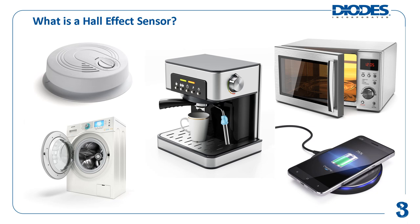Coffee and espresso machines can use Hall Effect Sensors as part of a flow meter to detect the amount of beverage dispensed. Microwave ovens can use Hall Effect Sensors to detect if its door is opened or closed, and Hall Effect Sensors can also be used in the microwave's control knob and buttons. Phone docking stations can use Hall Effect Sensors to detect if the phone has been properly docked before initiating charging. Even among these select examples, Hall Effect Sensors may be used in these applications beyond what was just described.